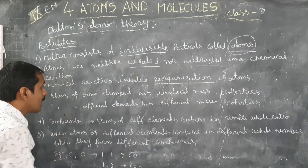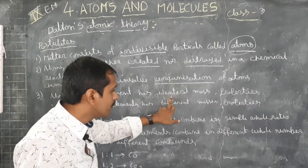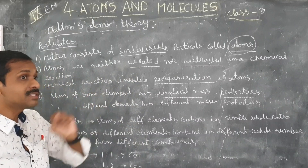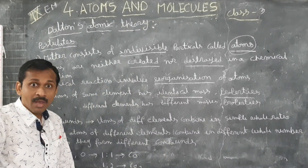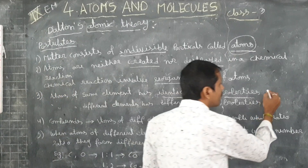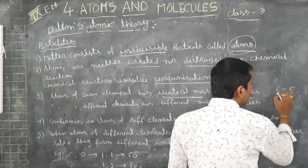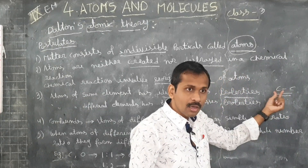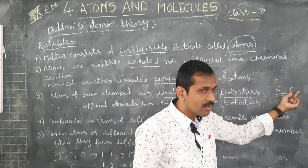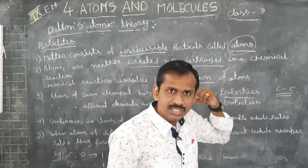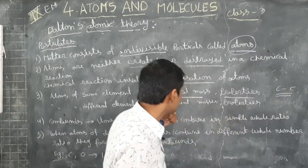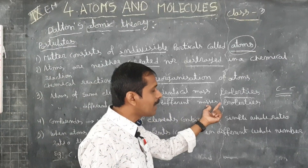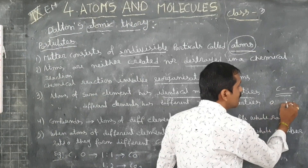The third point: atoms of the same element have identical mass and properties. For example, the first atom of carbon and the second atom of carbon have the same mass and the same properties. Atoms of different elements have different masses and different properties — for example, oxygen and carbon.